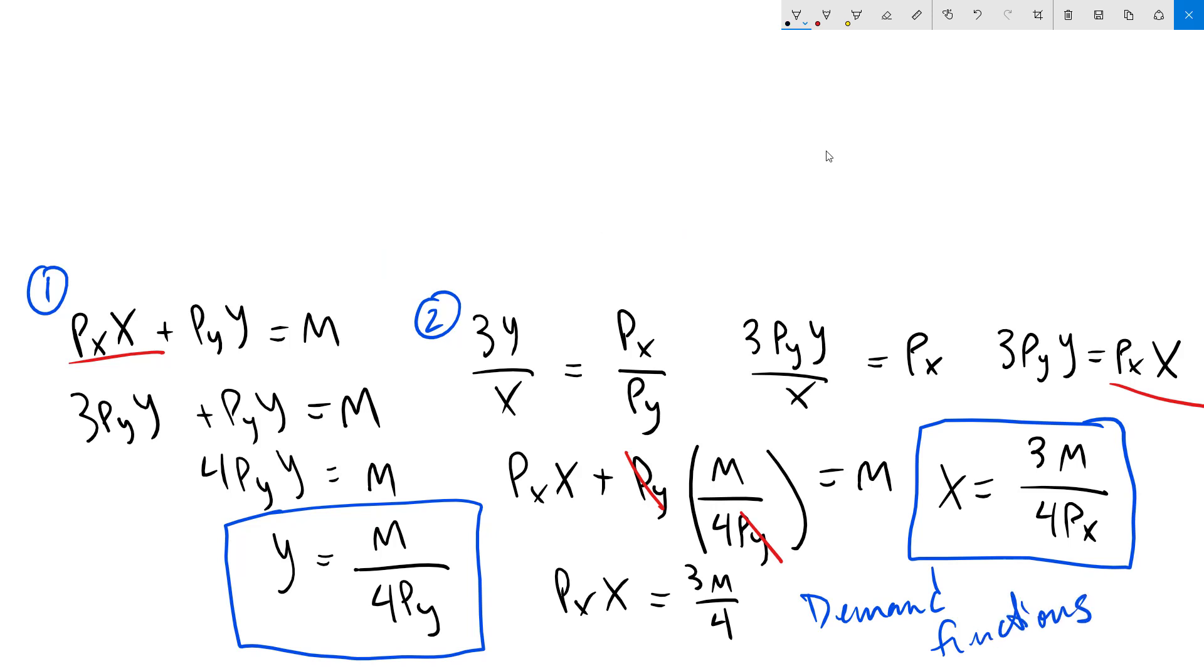Now that we have our demand functions, we can figure out our consumer equilibrium by plugging in numbers for m, Px, and Py. In our case, we have m equals 100, Px equals 5, and Py equals 2.5. We'll start with y equals 100 over 4 times 2.5, which is 10.